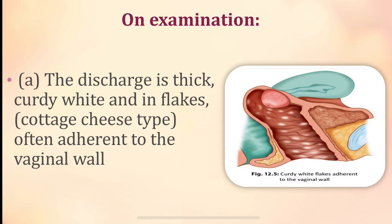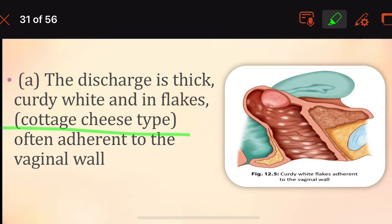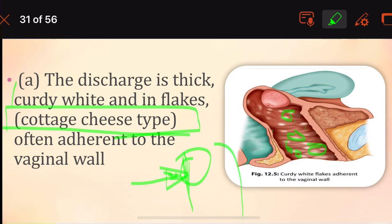On examination, the discharge is thick, curdy white, and present in flakes — described as a cottage cheese type discharge. These white flakes are adherent, meaning they stick tightly to the vaginal wall.